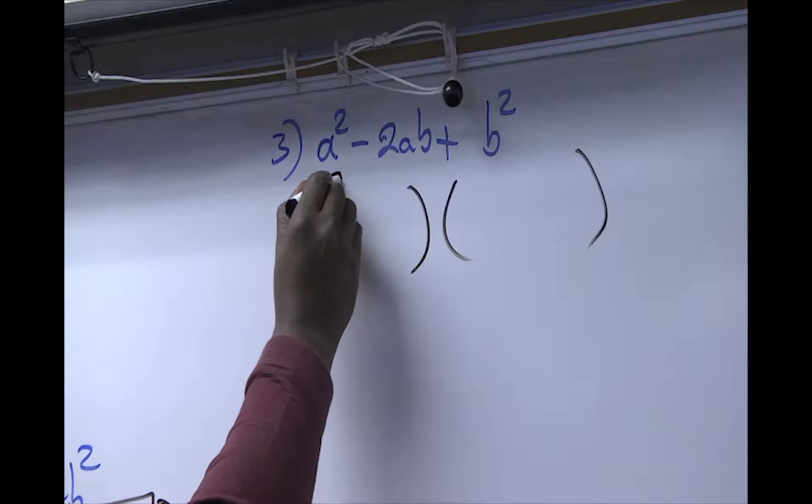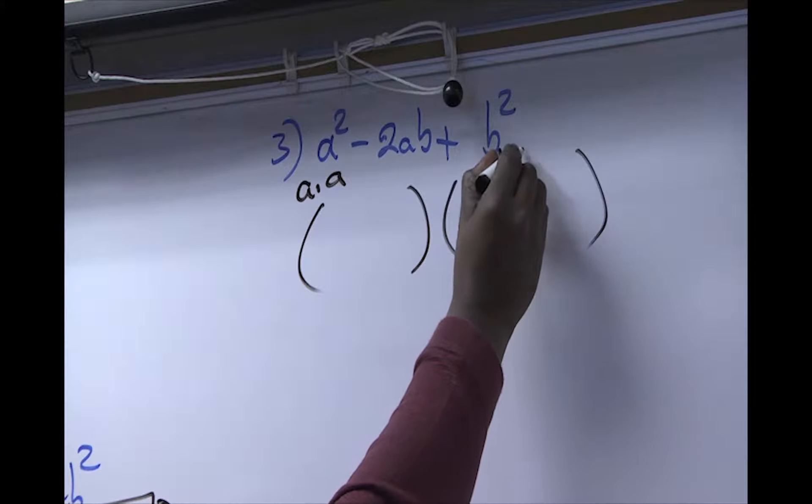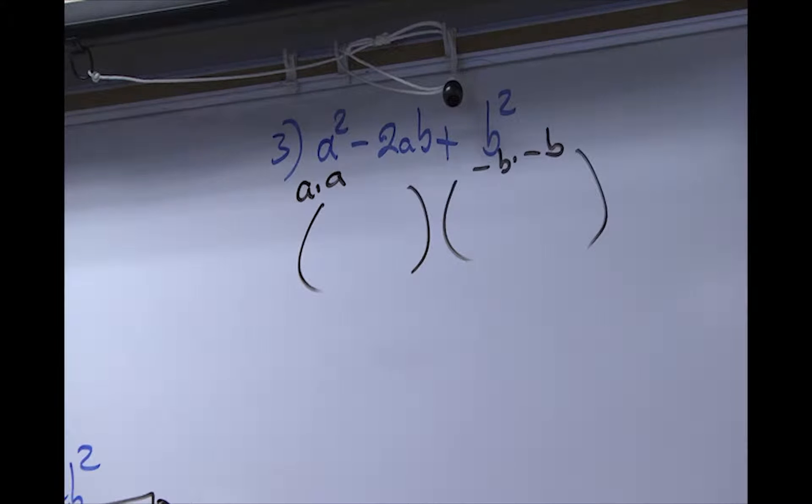And the b², in this case, will be a negative b times a negative b. Why are we using negative? Because the middle term is negative. So when you combine those two things, you do get that negative 2ab.